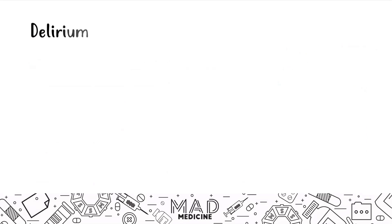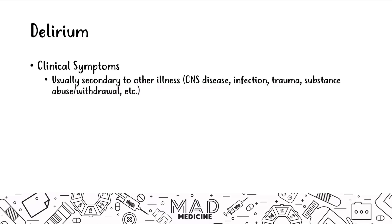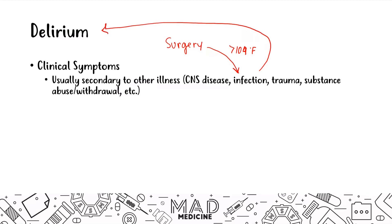When it comes to delirium, you should be very comfortable with the clinical symptoms. Delirium usually occurs secondary to something else. On a USMLE Step question, you'll often see a patient who just got out of surgery and has an infection with a temperature greater than 104°F — and because of the infection you see that they're delirious, having hallucinations, not talking to you properly, and having altered day-night and sleep patterns.